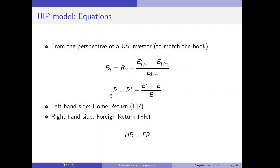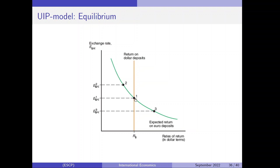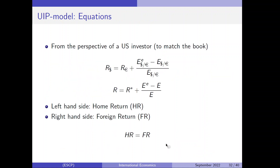In the following, we would like to use this equation to derive the following graph. There is one vertical line which represents the home return curve, and there is a downward sloping convex green curve which is the foreign return curve. We are inserting these two curves in a diagram where we have the exchange rate on the vertical axis and the home return and the foreign return on the horizontal axis.